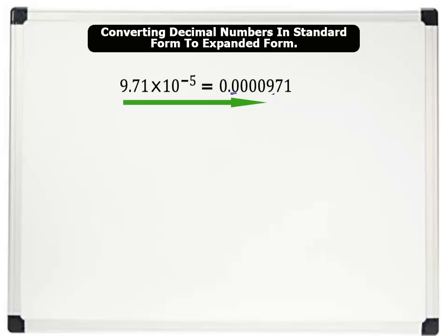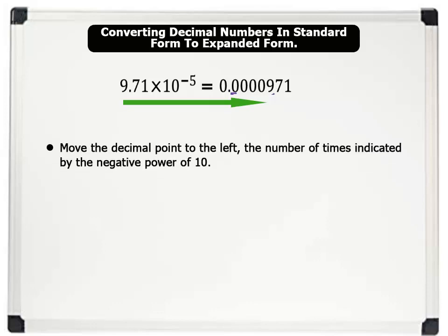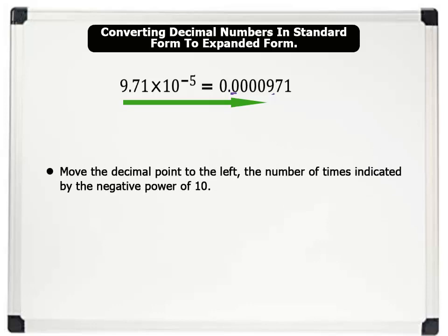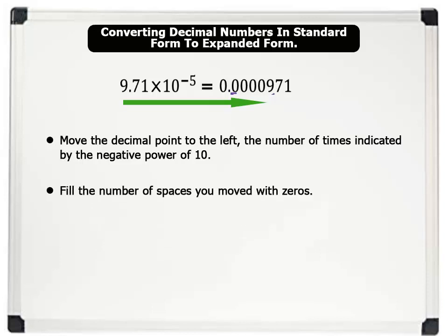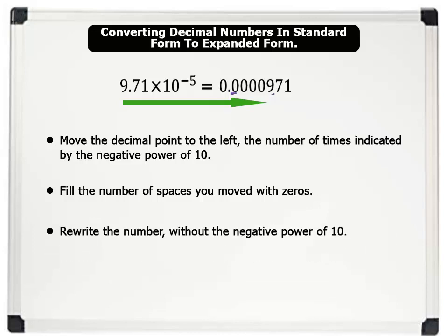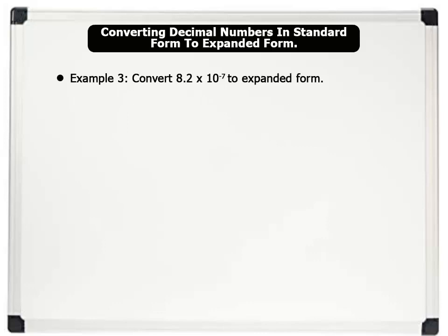We do this by following these simple steps: 1. Move the decimal point to the left the number of times shown on the negative power of 10. 2. Fill the number of spaces you moved with zeros. 3. Rewrite the number without the negative power of 10. Let's see our final example. Example 3: Convert 8.2 times 10 raised to the power minus 7 to expanded form.